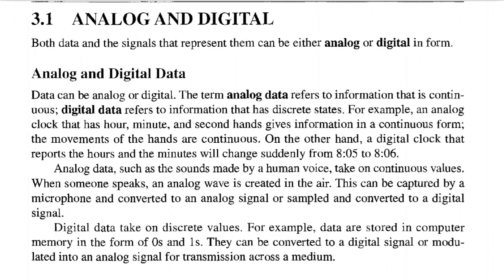Analog and Digital. Both data and the signals that represent them can be either analog or digital in form. Data can be analog or digital. The term analog data refers to information that is continuous. Digital data refers to information that has discrete states.